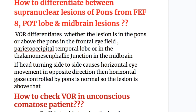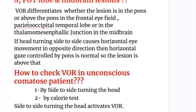How to differentiate supranuclear lesions of the pons or horizontal gaze from the frontal eye field area 8, parieto-occipital temporal lobe, and midbrain lesions? VOR differentiates whether the lesion is in the pons or above the pons — in the frontal eye field, parieto-occipital temporal lobe, or thalamo-mesencephalic junction in the midbrain. If head turning side to side causes horizontal eye movement in the opposite direction, then horizontal gaze controlled by the pons is normal, so the lesion is above that level.